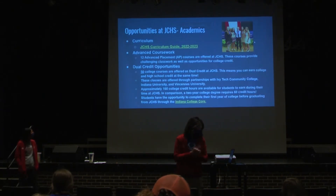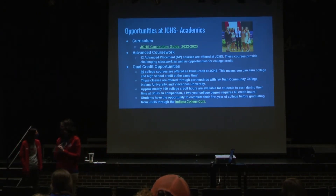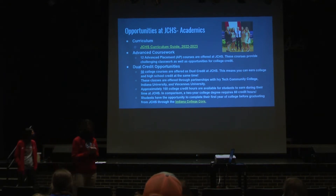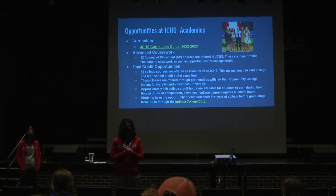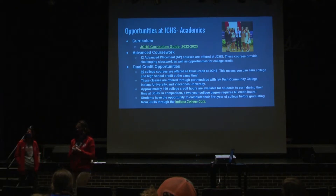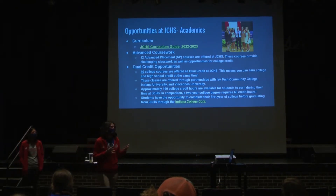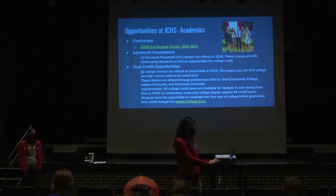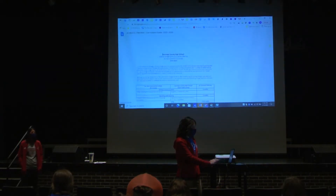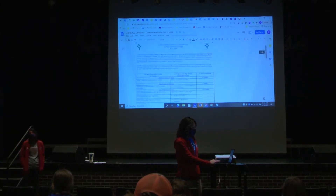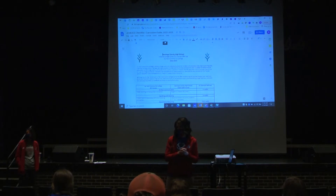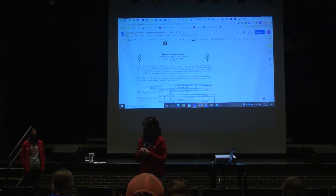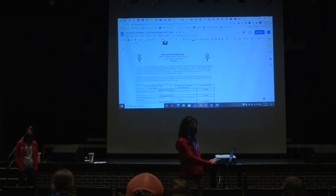We have lots of opportunities in advanced placement and dual credit here in the building. Dual credit means you get college credit along with your high school credit, which is really important because it's going to save you a lot of time and money. Here at Jennings County High School, you can actually earn your first year of college before you graduate — that could potentially save you about $30,000. You can always talk to your guidance counselors about that.